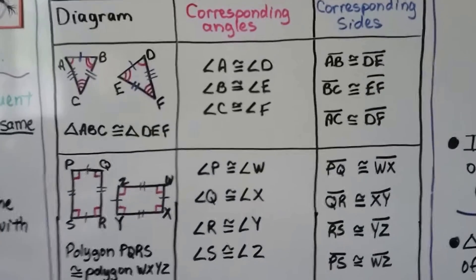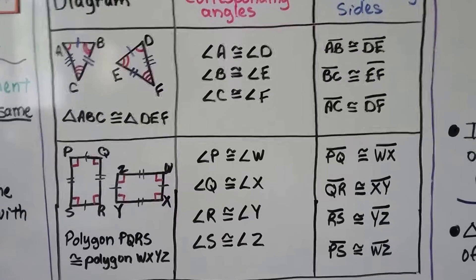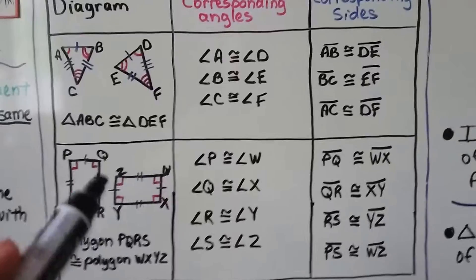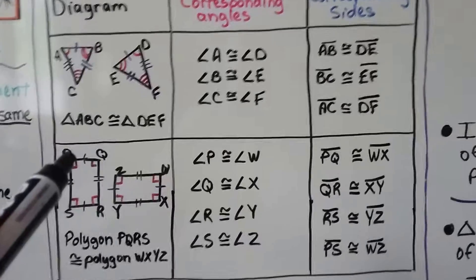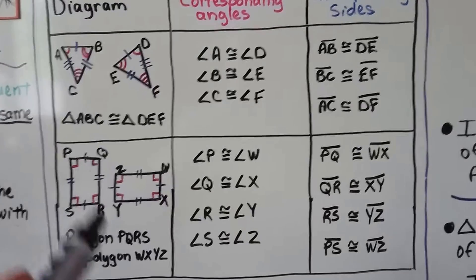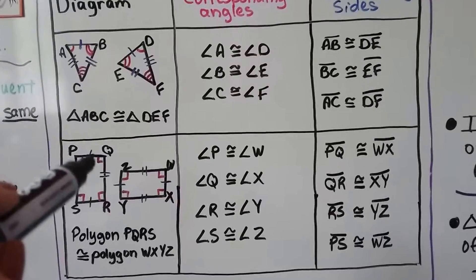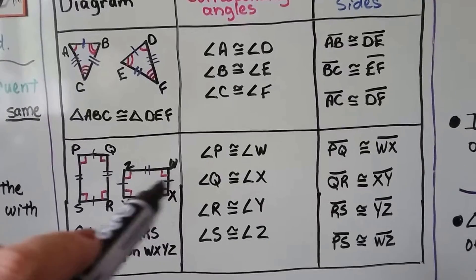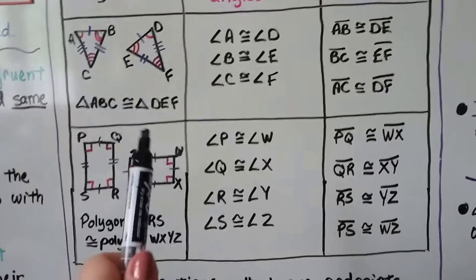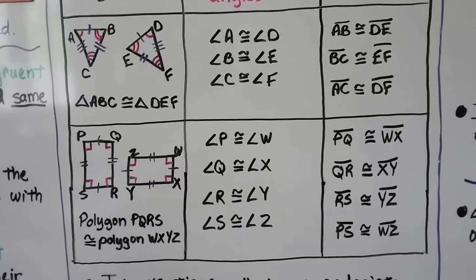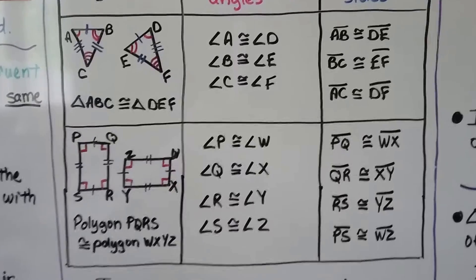We've got a couple of rectangles, and we can see that all the corners, all the angles, are 90-degree angles. They are all congruent to each other. We can see the tick marks on the sides, so this side is congruent to this side. It's almost like this rectangle — we could stand it up and compare them side by side. Because all the angles and all the sides are congruent, those two polygons are congruent.